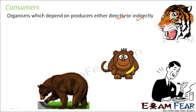What do we mean by directly and indirectly? When we say that an organism depends on a producer for its food directly, that means it directly consumes the producer. And what are producers? They are the green plants. So if an animal is directly consuming the green plant, that means they are directly dependent on the producer. Indirectly means they are not consuming the producer directly — they are consuming something else which is dependent on the producer.